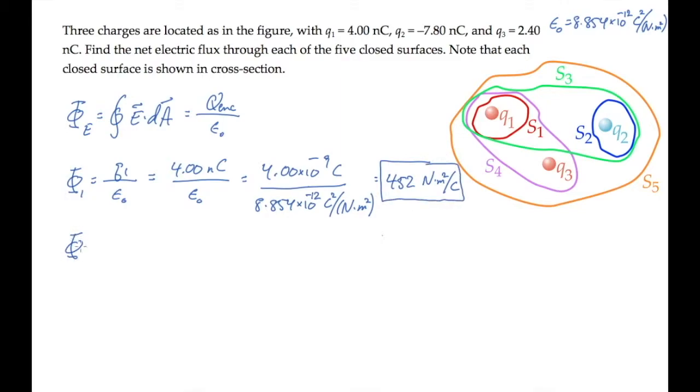Surface two is the blue one, and that encloses only charge q2. It has a value of negative 7.80 nanocoulombs. So making the same calculation gives us this electric flux through the blue surface.